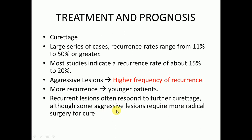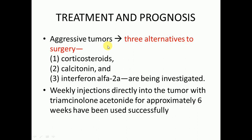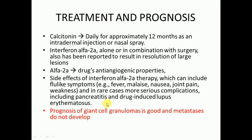For aggressive tumors, there are three alternatives to surgery: number one, corticosteroids; number two, calcitonin; and number three, interferon alpha-2a. Weekly injections directly into the tumor with triamcinolone acetonide for approximately six weeks have been used successfully as a non-invasive treatment for aggressive tumors. Calcitonin can be used daily for approximately 12 months as an intradermal injection or nasal spray. Interferon alpha-2a, alone or in combination with surgery, has also been reported to result in resolution of large lesions, due to its anti-angiogenic properties.